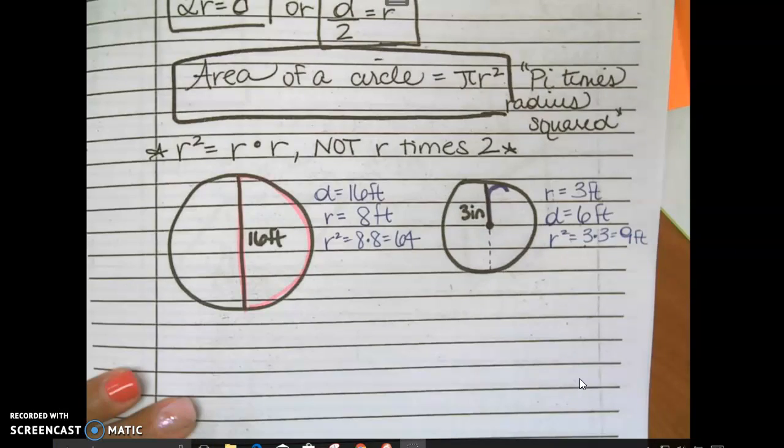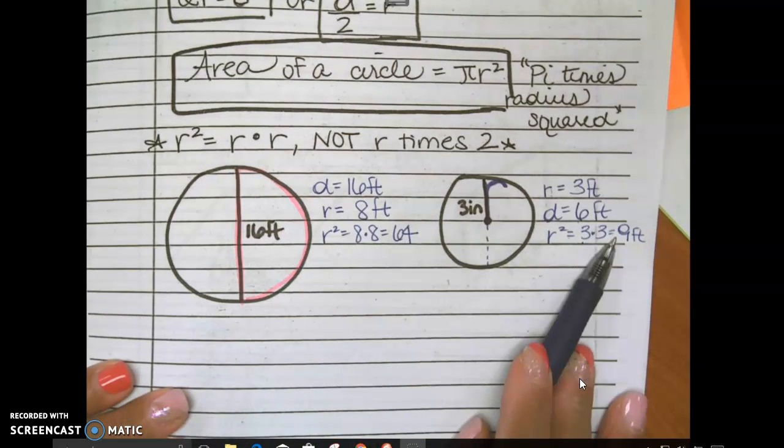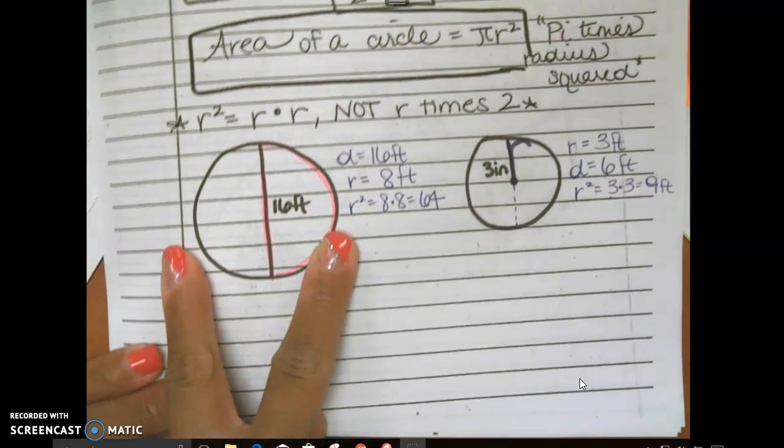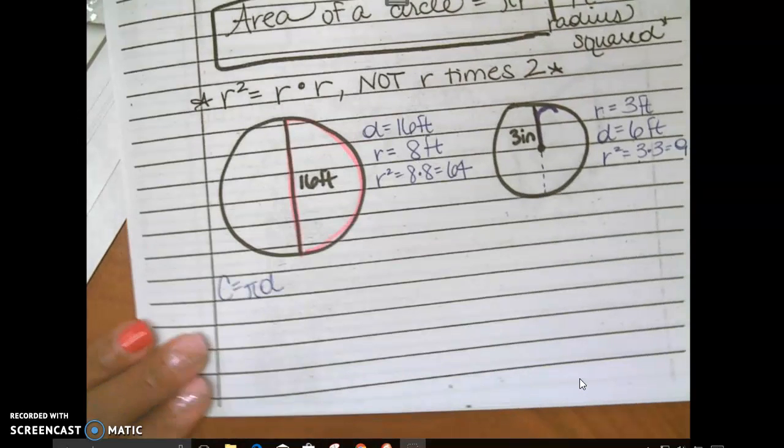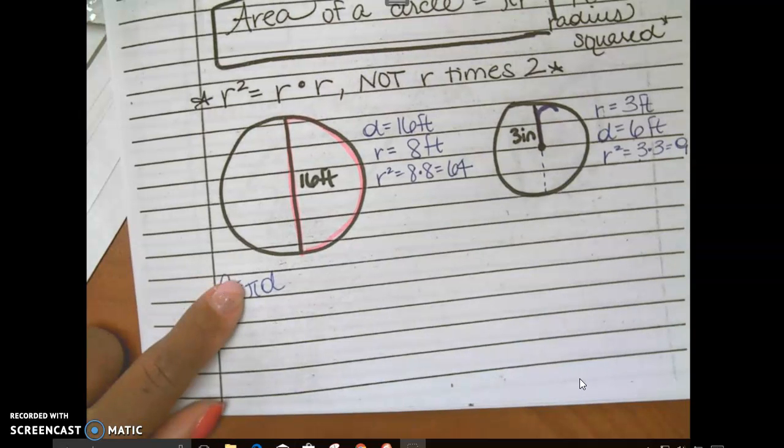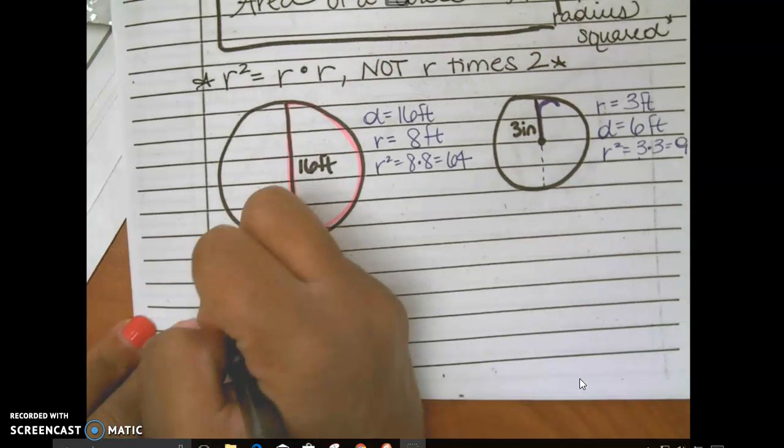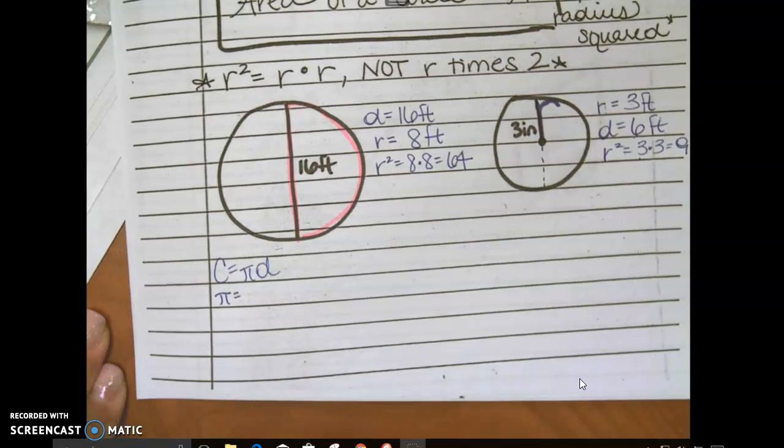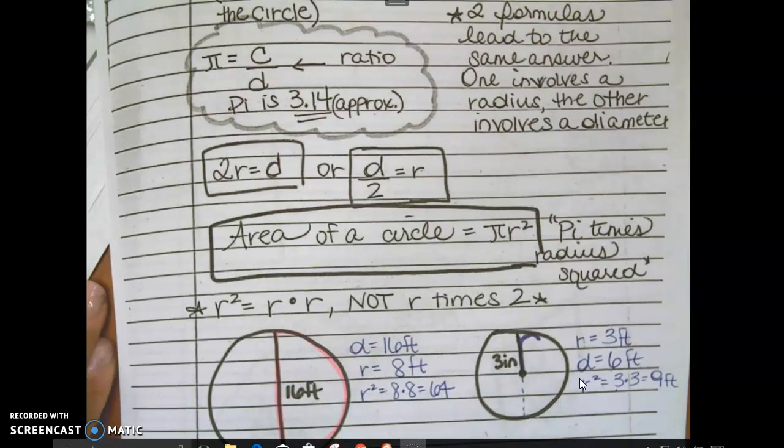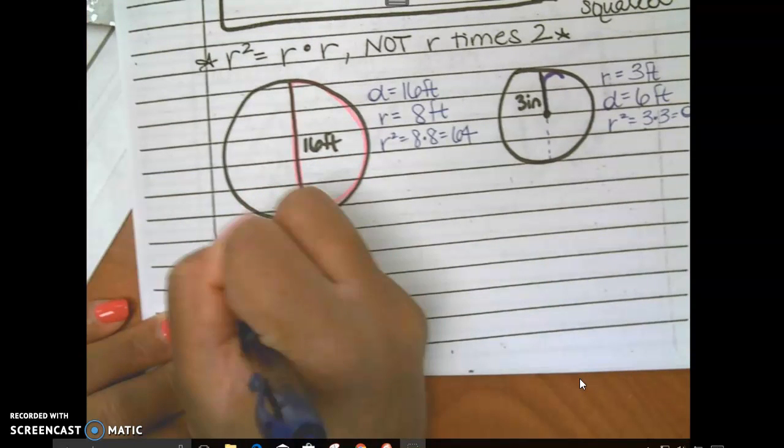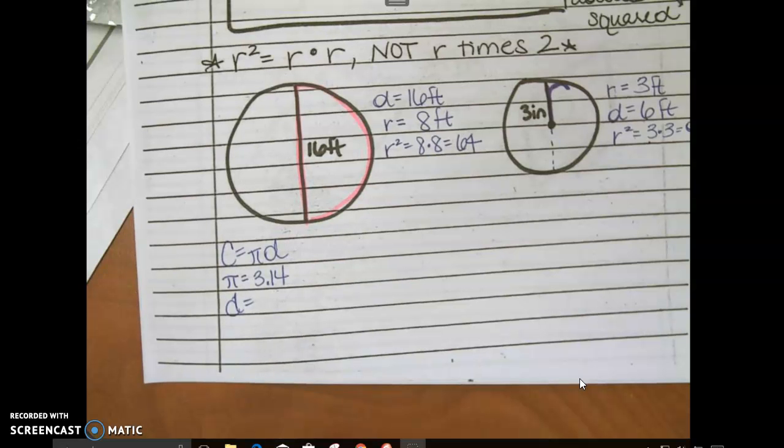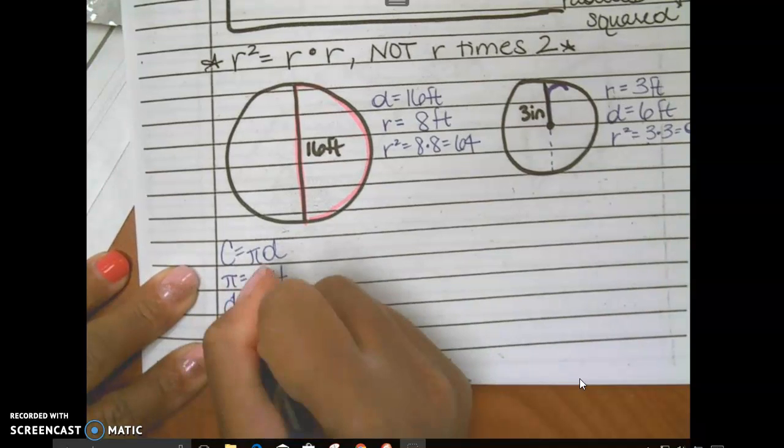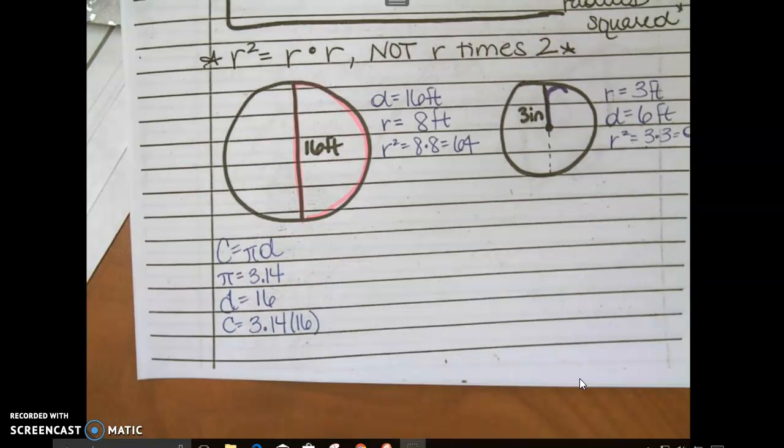All right. Now I've got 64 here for this radius squared, and I got 9 here for this radius squared. So let's focus on one circle. I want to find the area and the circumference. Circumference is calculated as pi times diameter, or 2 times pi times R. In this case, I only want to multiply two numbers: pi and diameter. What is pi? I said it earlier on this page. 3.14. And then the diameter for this circle is 16.